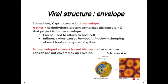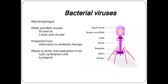The envelope covers the capsid with its genetic material. Spikes — carbohydrate-protein complexes, that is glycoproteins — project from the envelope and are used to attach to the host cell. Non-enveloped or naked viruses are those whose capsid is not covered with an envelope. Bacterial viruses (bacteriophages) contain DNA or RNA as genetic material, either double-stranded or single-stranded, and the genetic material may be linear or circular.